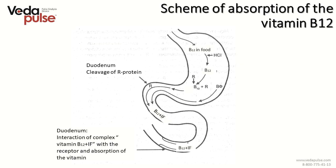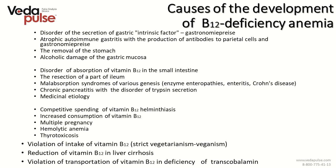Scheme of absorption of vitamin B12: in food the vitamin is bound with proteins. This bond gets destroyed in the stomach under the influence of acid, and the vitamin is then bound with R proteins. Then it comes to the intestine where it gets bound with intrinsic factor, and with the help of transporting protein, vitamin B12 comes into cells. Causes of vitamin B12 deficiency anemia include: disorder of secretion of gastric intrinsic factor, disorder of absorption in the small intestine, competitive spending of vitamin B12, increased consumption, violation of intake, reduction of vitamin in liver cirrhosis, and violation of transportation in deficiency of transcobalamin.